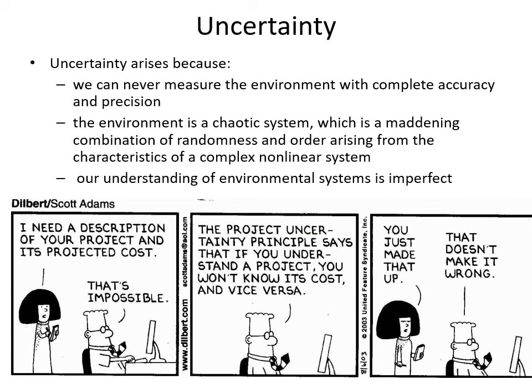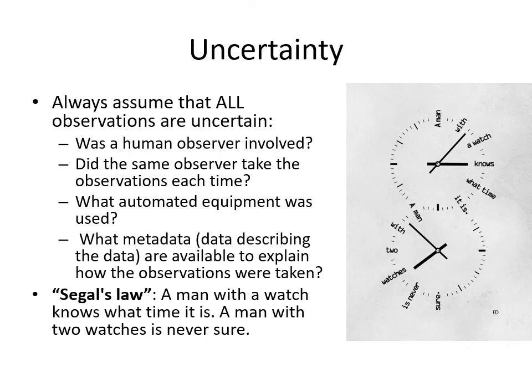It shouldn't come as a surprise that uncertainty is out there. We can't measure the environment with complete accuracy and precision. The environment is chaotic — a maddening mix of randomness and order — and our understanding of environmental systems is far from perfect. You should always assume that observations have uncertainty, and human observers are not necessarily worse than automated ones.